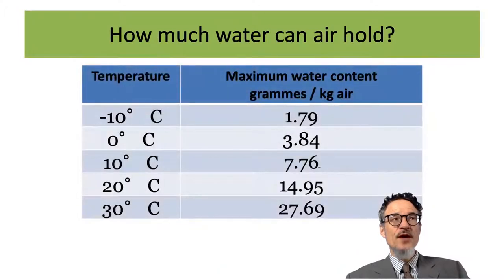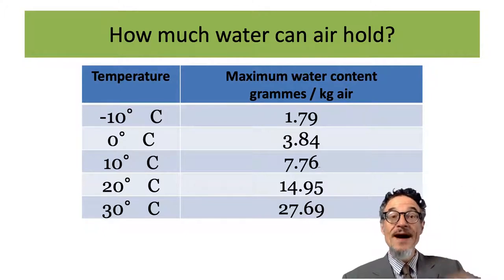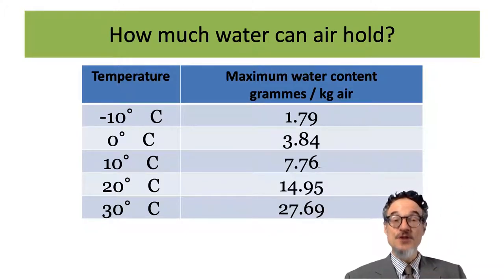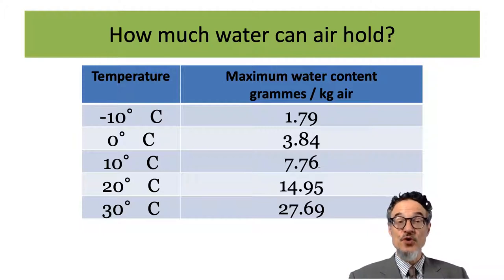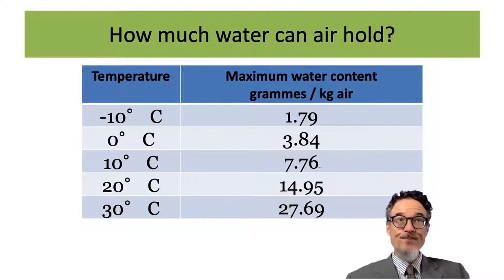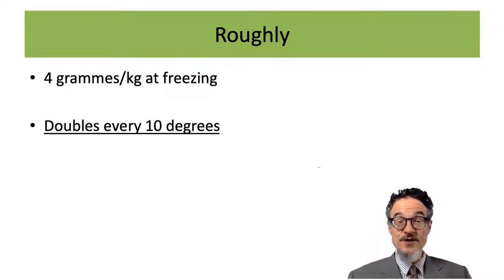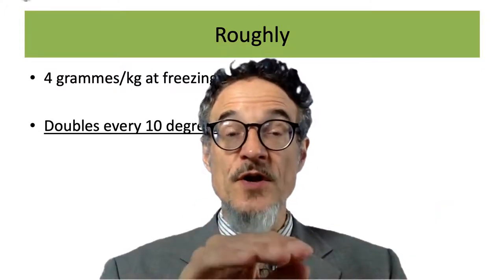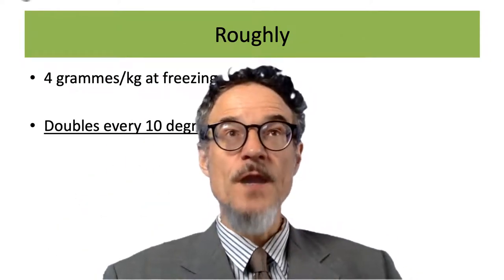For temperatures in and around buildings, we're usually in a range from about minus 10 to plus 30 degrees centigrade. Very roughly, at freezing point it's about 4 grams per kilogram, and every 10 degrees it doubles. So if you go 10 degrees warmer it's twice as much, another 10 degrees it's twice as much again, and so on.